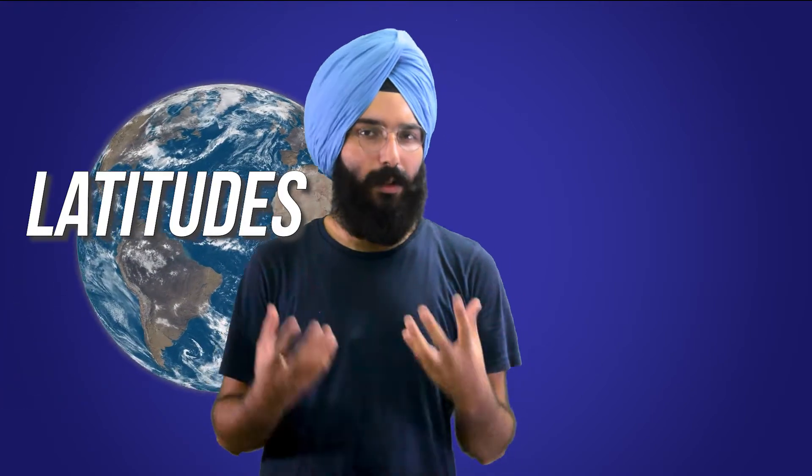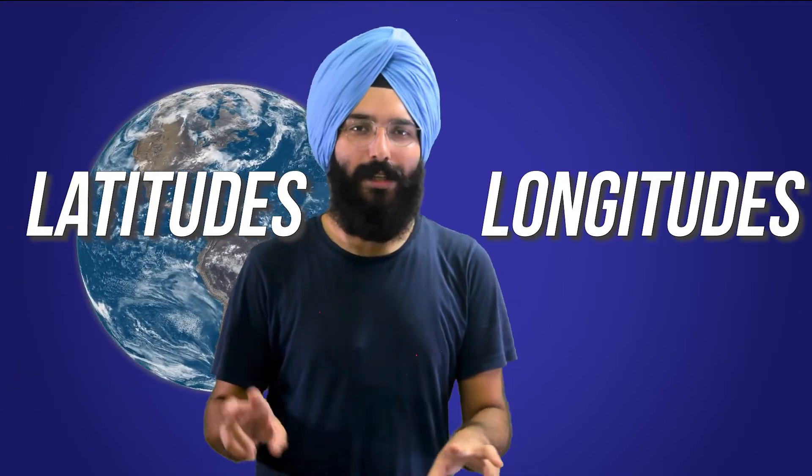So on Earth we have latitudes and longitudes. These are the only two things I need to know if I want to know the position of anything on Earth. But what about the night sky? If I want to know the position of some star that I like, how would I do that? Let's find that out.